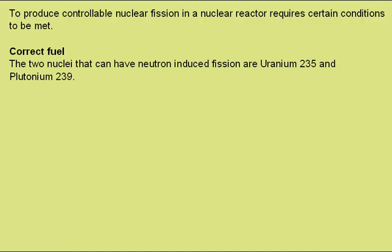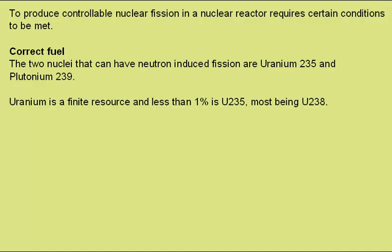The two nuclei that can have neutron-induced fission are uranium-235 and plutonium-239. Uranium is a finite resource and less than 1% of the naturally occurring uranium is uranium-235. Most is the isotope uranium-238, which is not fissile.